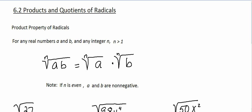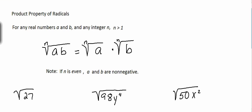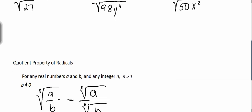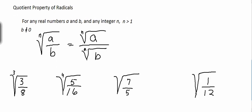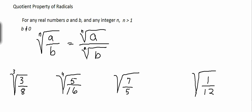The quotient property of radicals we'll find is similar to the product property of radicals in that the quotient can be broken into several radicals. For example, a radical with fraction a over b can be broken into the nth root of a over the nth root of b.